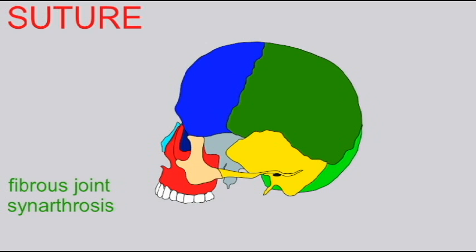There are different types of synarthroses, and the type we see between the skull bones is known as a suture.